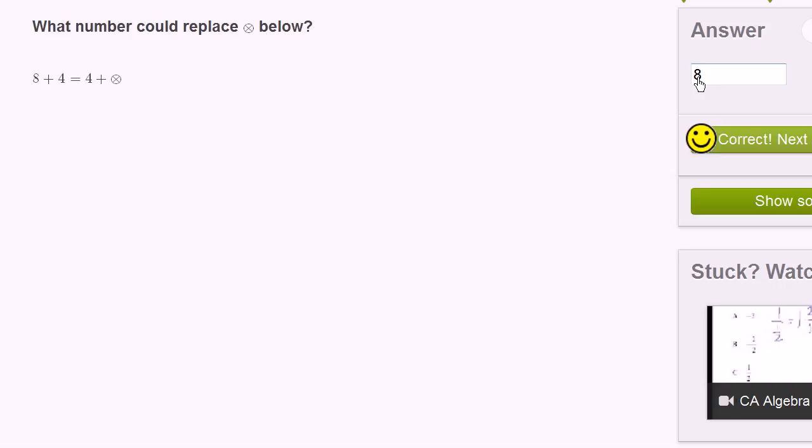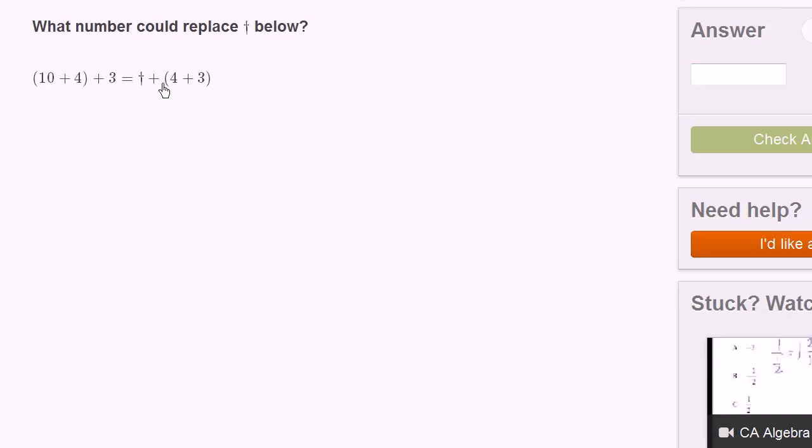Let's do another one. What number could replace this little, looks almost like a cross below, or looks almost like a dagger or something. 10 plus 4 in parentheses plus 3. And then they have something plus 4 plus 3.